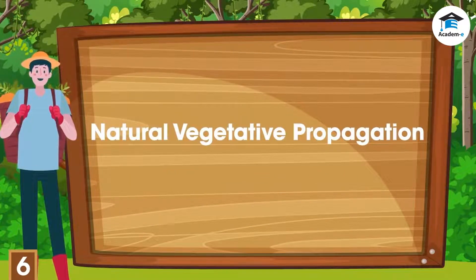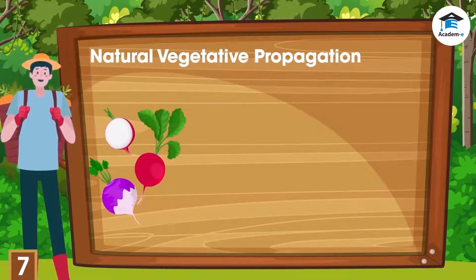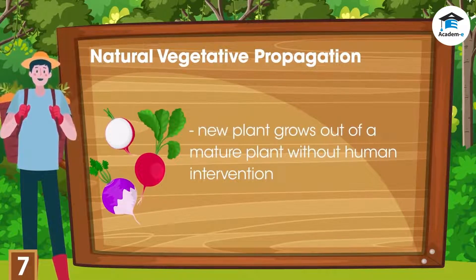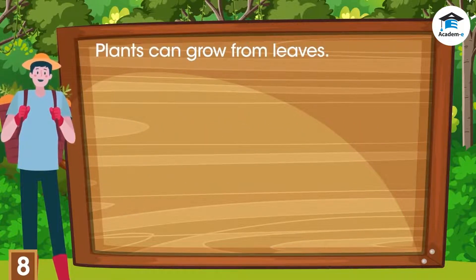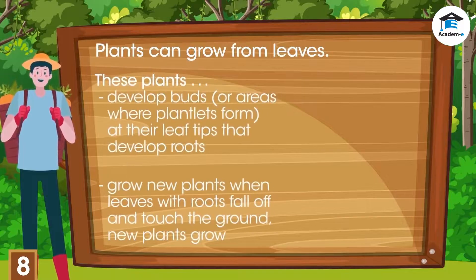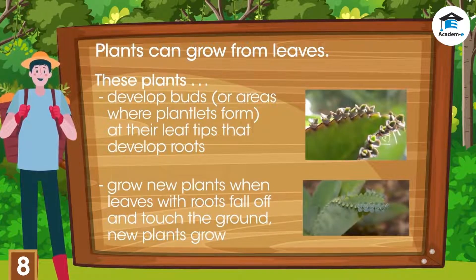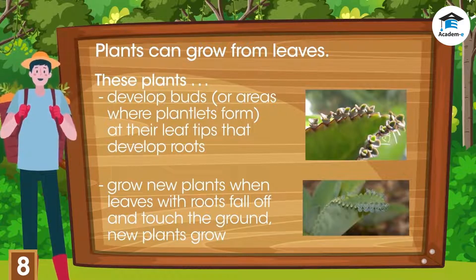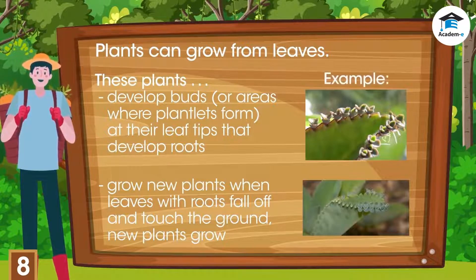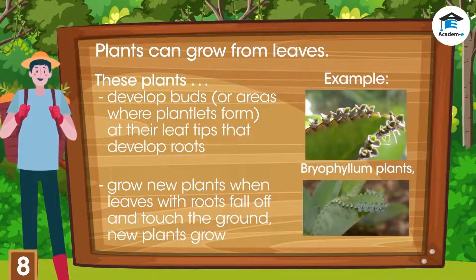Natural vegetative propagation is the process in which a new plant grows out of a mature plant without human intervention. Plants can grow from leaves; some leaves develop buds or areas where plantlets form at their tips. These buds eventually develop roots, and when the roots fall off and touch the ground, new plants grow and develop into adults. Examples are Bryophyllum plants like Kalanchoe.